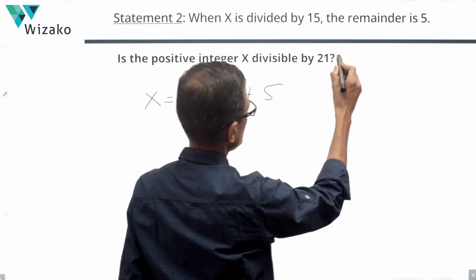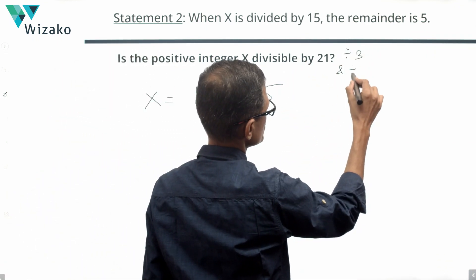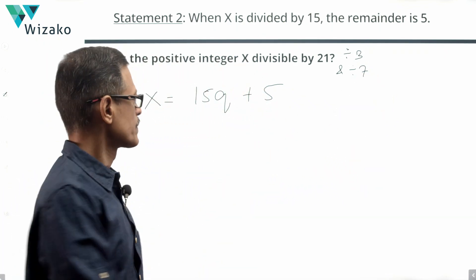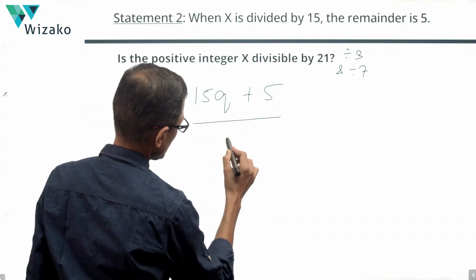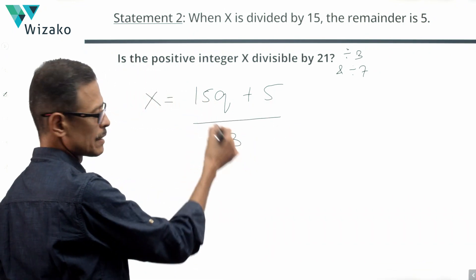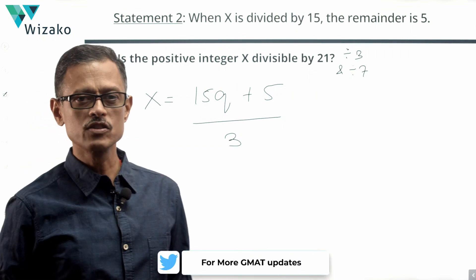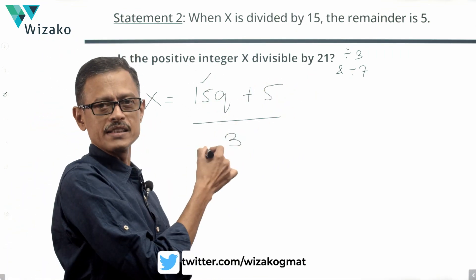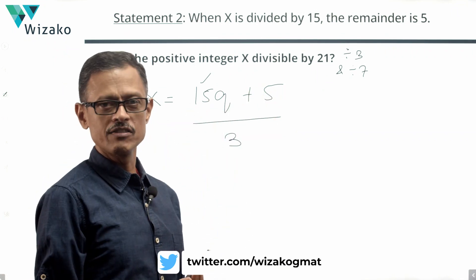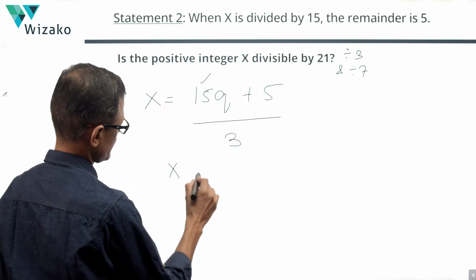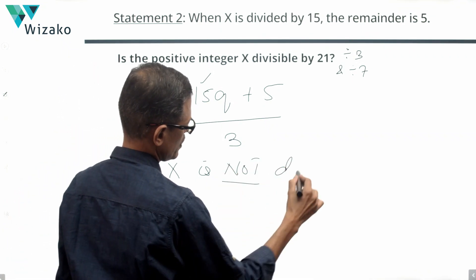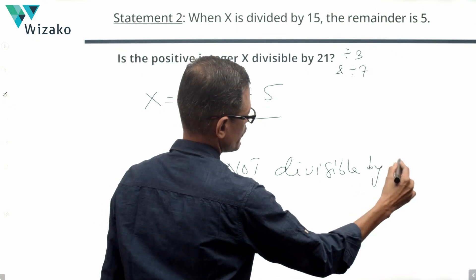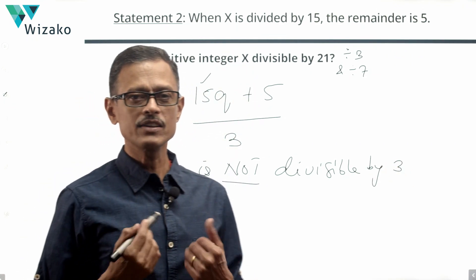To be divisible by 21, the number must be divisible by both 3 and 7. Checking divisibility by 3: 15 is divisible by 3, so any multiple of 15 — that is, 15q — is divisible by 3. However, 5 is not divisible by 3, which means 15q + 5 is not divisible by 3, and therefore x is not divisible by 3.